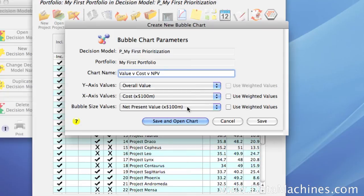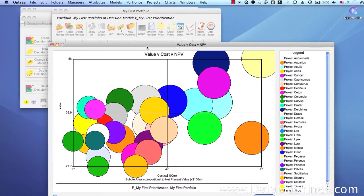Now, before I click Save, I want to mention that the Use Weighted Values checkmark lets you substitute the weighted attribute values for the actual attribute values. The weighted attribute values are the values that are summed to make the overall project values score. So we'll click Save and Open Chart to see the bubble chart we've just created.